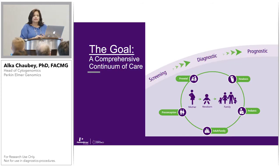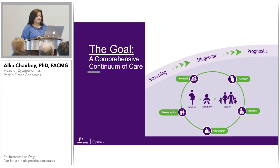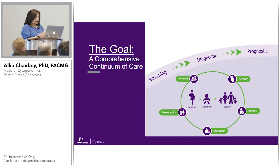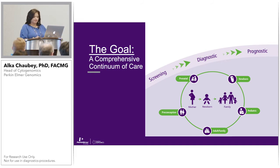Perkin-Elmer has been a company involved in a lot of screening — first trimester screening, newborn screening — and now with Perkin-Elmer Genomics, we are trying to complete the continuum of care, going from screening to diagnostic to prognostic, covering pediatric, adult, and family disorders.